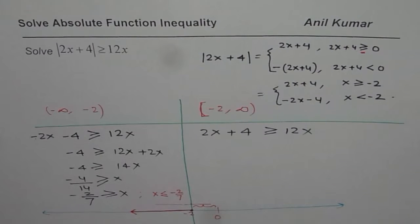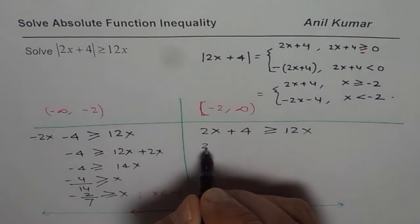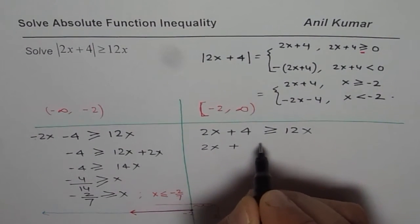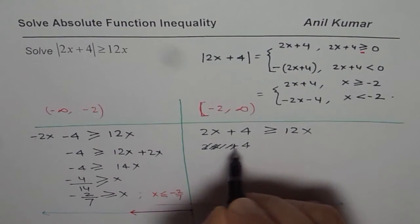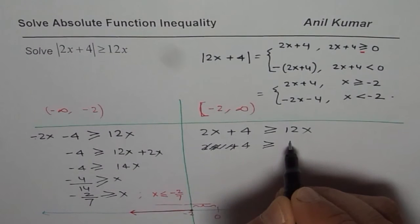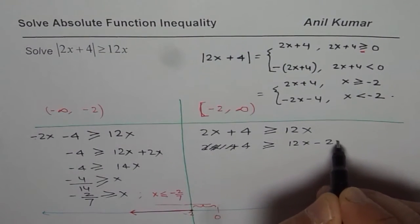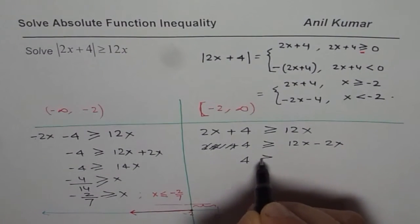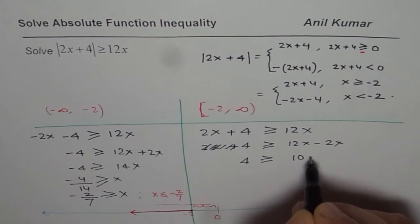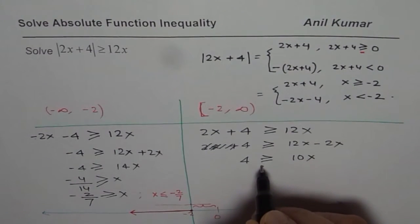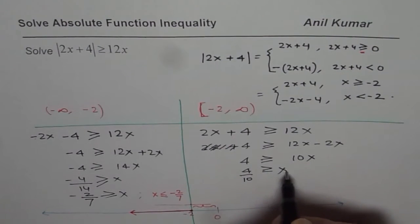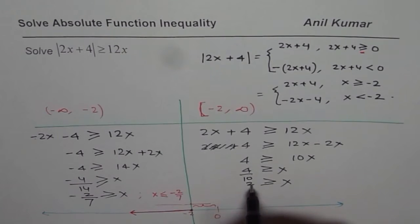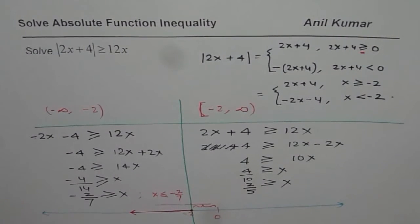Now let us do the right side. We get 2x plus 4, so what we will do here is we will take 2x on the right side. So we will keep 4 here. We have 12x minus 2x. So 4 is greater than or equals to 10x. Dividing by 10, we have 4 divided by 10 is greater than or equal to x, which is x is less than or equal to 2 over 5.